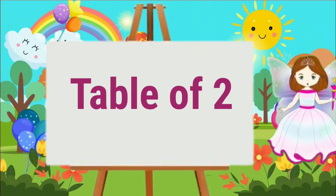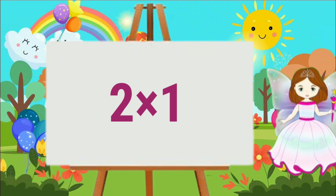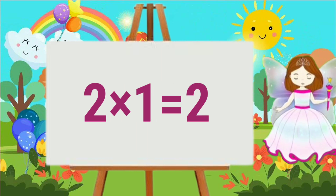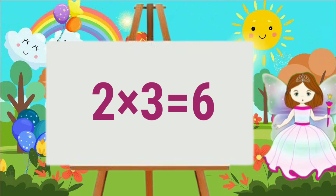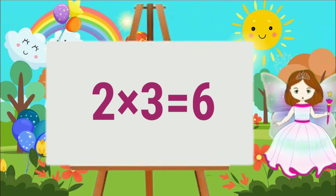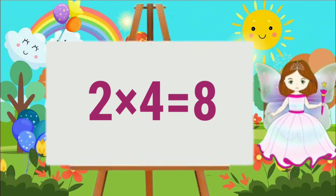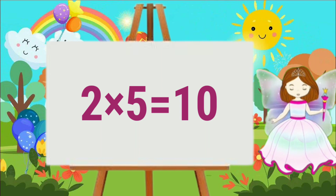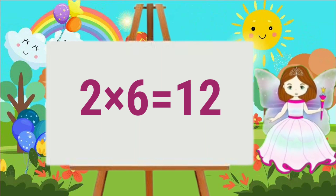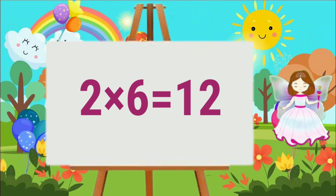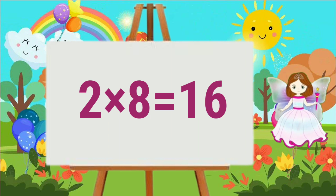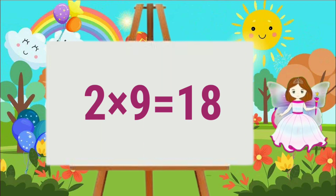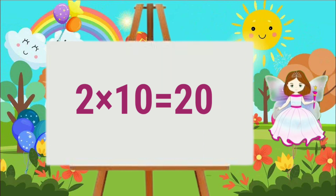Table of Two. Two six's are twelve. Two seven's are fourteen. Two eight's are sixteen. Two nine's are eighteen. Two ten's are twenty.